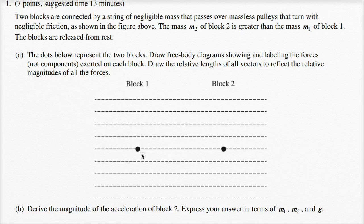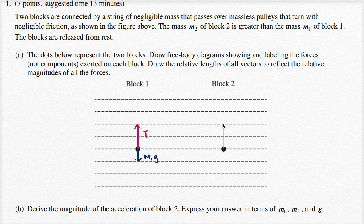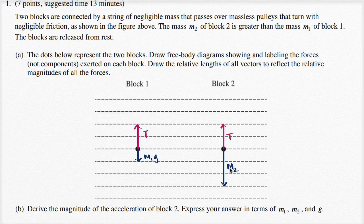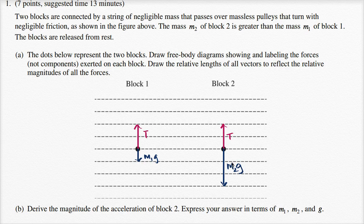Now let me draw the forces in the right place on the diagram. On block one, I have the weight m1g acting downward, and the tension acting upward — I'll make that two lines tall. On block two, I have the same magnitude of tension pulling upward, and its weight m2g which is larger than the tension, so I'll make it three lines tall. The way I've drawn it, m2 would be three times larger than m1, though they don't specify that — they only say m2 is larger. Since the upward tension exceeds the downward weight on block one, there's a net upward force accelerating it up. On block two the net force is downward, accelerating it down — consistent with our intuition that block two weighs more.